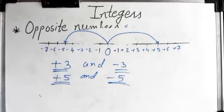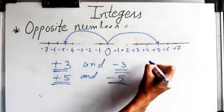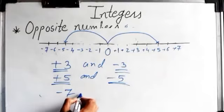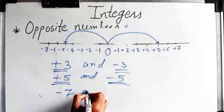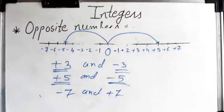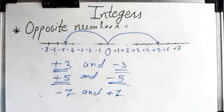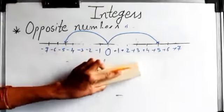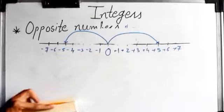So opposite numbers — you have to remember — only the signs will be different. If one is plus, the other will be minus. For example, minus seven and plus seven are opposite numbers.